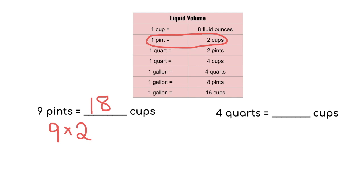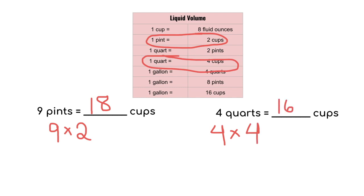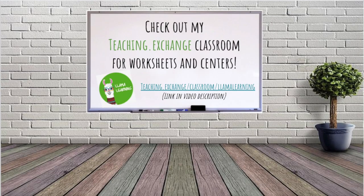Moving on, we have four quarts equals blank cups. So we're starting with four, multiplying because we're going from a larger unit of quarts to a smaller unit of cups. We find the conversion that has quarts and cups together — one quart equals four cups — so we're multiplying by four. Four times four is 16. So four quarts equals 16 cups. Thank you for watching my video. I hope it helped. Check out my teaching exchange classroom for worksheets and centers, and don't forget to hit subscribe for more videos.